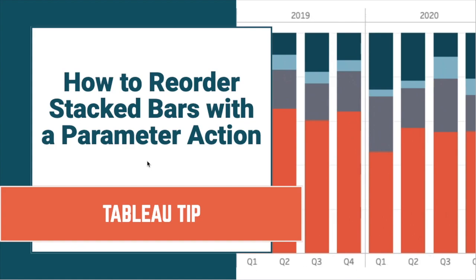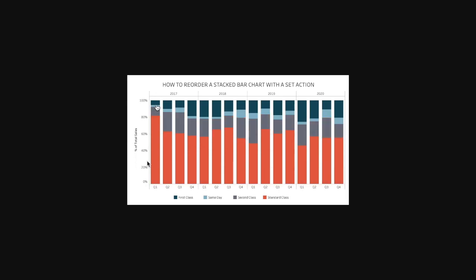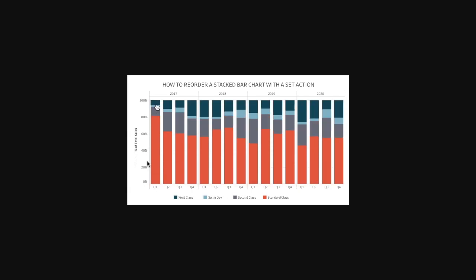In this tip I'm going to show you how to reorder stacked bars with a parameter action by clicking on a bar. Previously I showed you how to do this with a set action. The idea is that you click on one of the colors and it sorts that color to the bottom. With a set action you have multiple things you need to do to configure it properly. I find the parameter action, when you only need a single value, is much easier to set up than a set action.